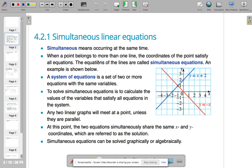Let's look at simultaneous equations. Simultaneous means occurring at the same time. When a point belongs to more than one line, the coordinates of the point satisfy all equations. The equations of the lines are called simultaneous equations.